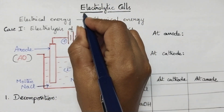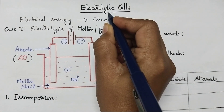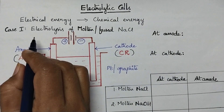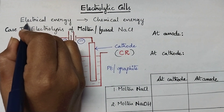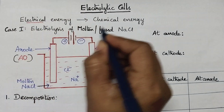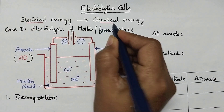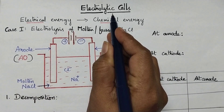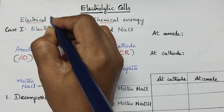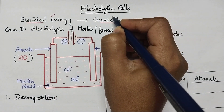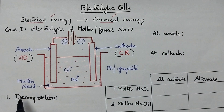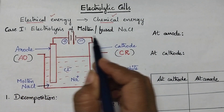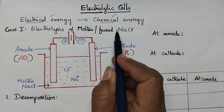Hello students. In this video I am going to discuss about the electrolytic cells. An electrolytic cell is a device that is used for the conversion of electrical energy into chemical energy. So simply in an electrolytic cell, electrical energy will be converted into chemical energy. Here I am going to discuss about the electrolysis of different types of electrolytic solutions.